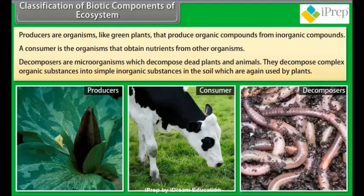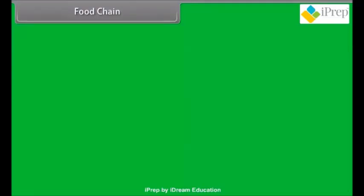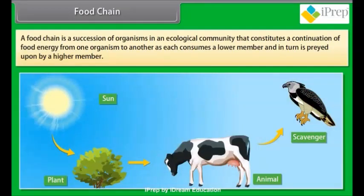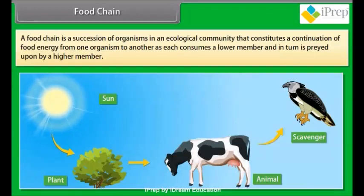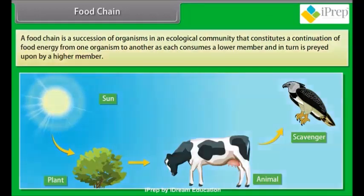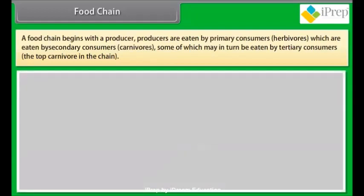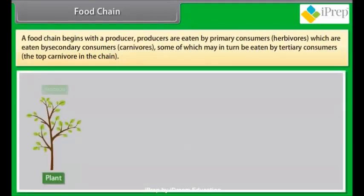Decomposers are microorganisms which decompose dead plants and animals. They decompose complex organic substances into simple inorganic substances in the soil, which are again used by the plants. A food chain is a succession of organisms in an ecological community that constitutes a contribution of food energy from one organism to another as each consumes a lower member and in turn is preyed upon by a higher member.